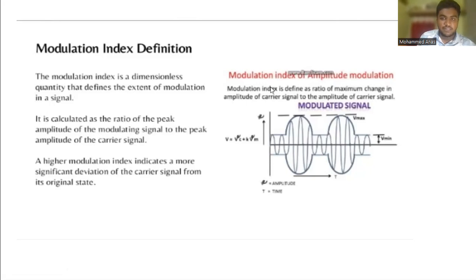Modulation index is defined as the ratio of maximum change in the amplitude of the carrier signal to the amplitude of the carrier signal.